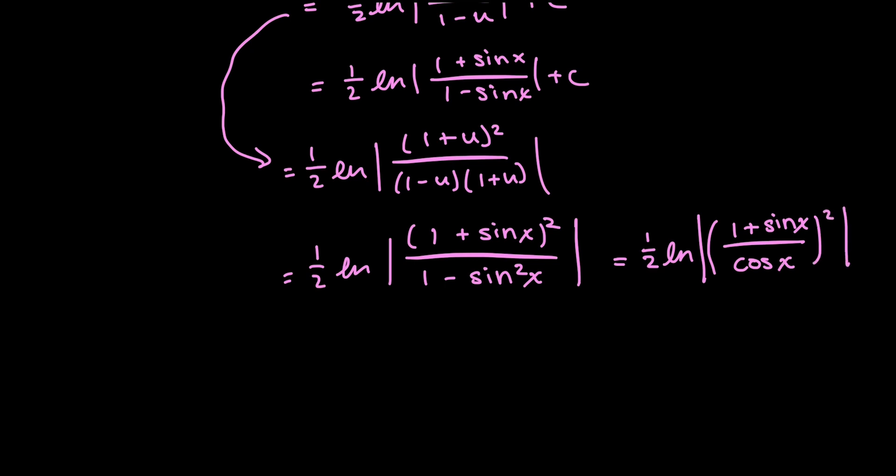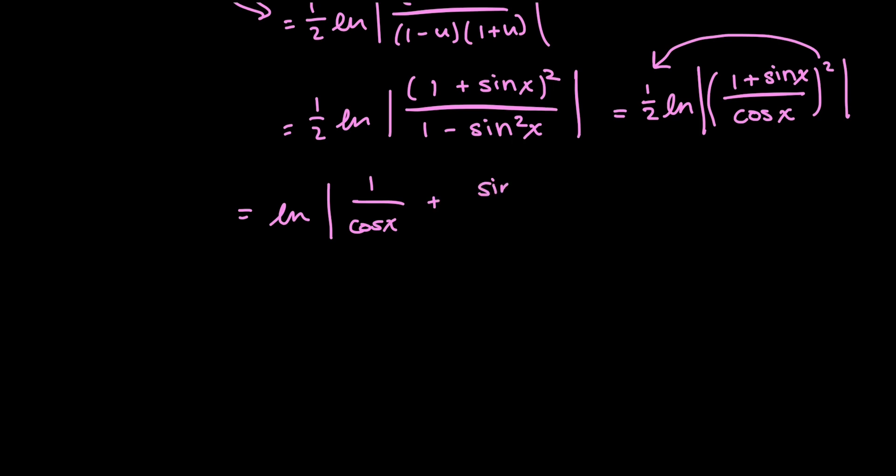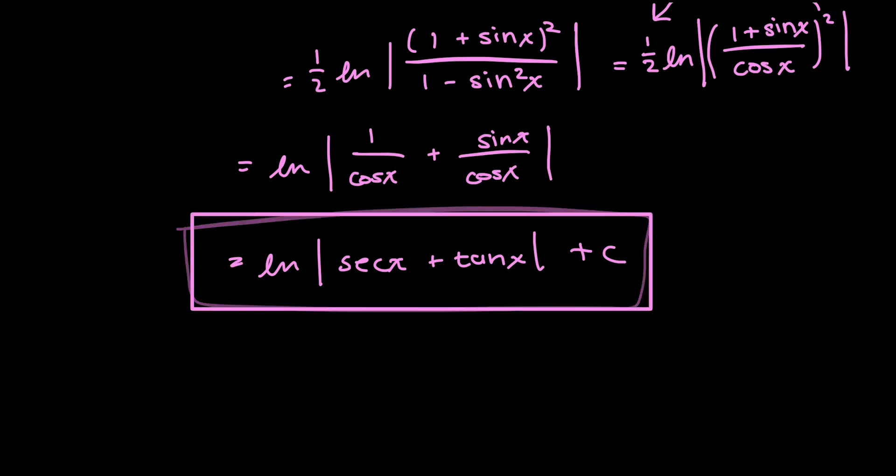And then again, using my properties of logs, I can take this exponent 2 outside. So this becomes log of 1 over cosine x plus sine x over cosine x, or log of secant x plus tan x plus the arbitrary constant c. And that's it.